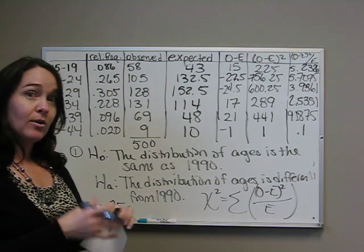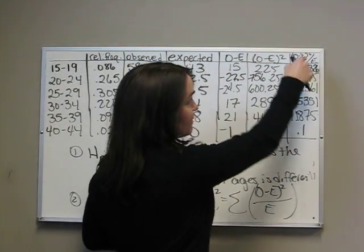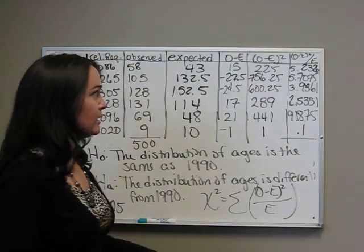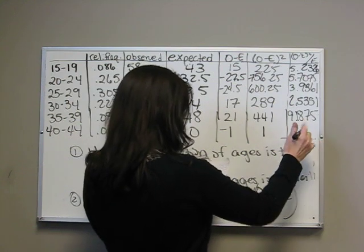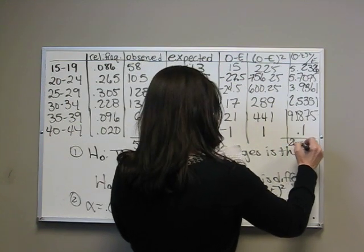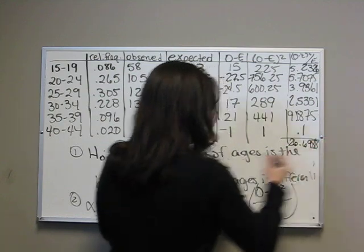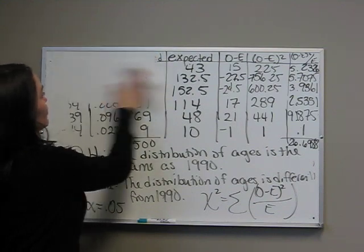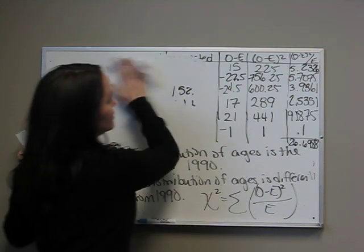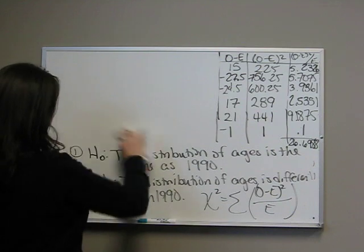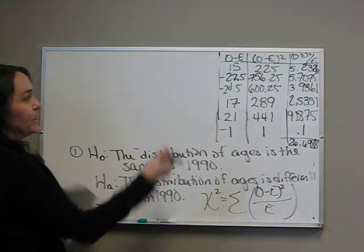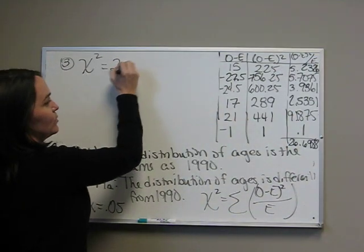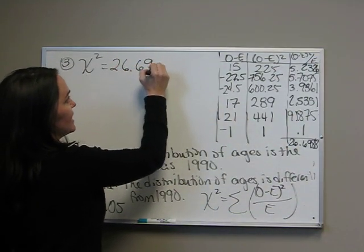Now, we're not quite done. What we want to do is add up now all of these values, the O minus E all squared divided by E. So when we add all this up, you get 26.6988. And that is our step three. Our chi-squared value is 26.6988.